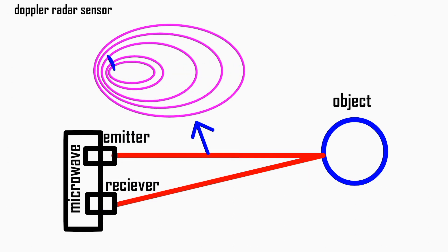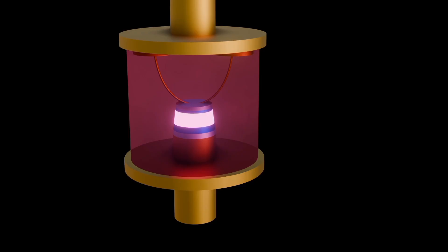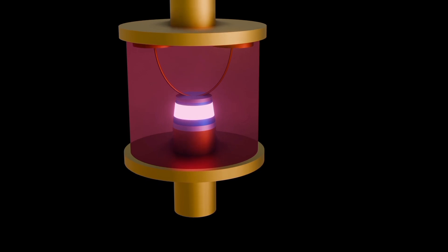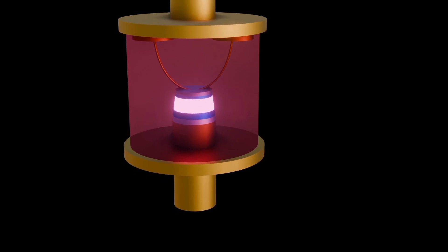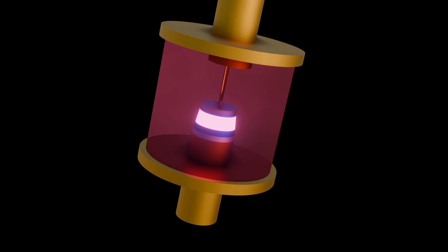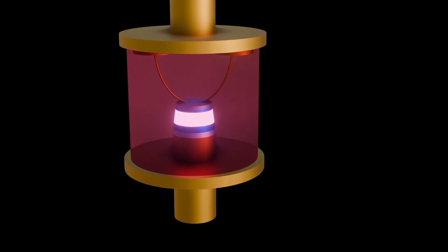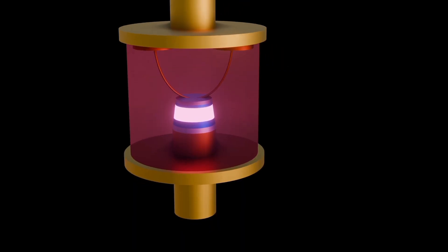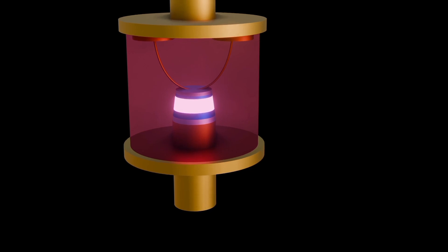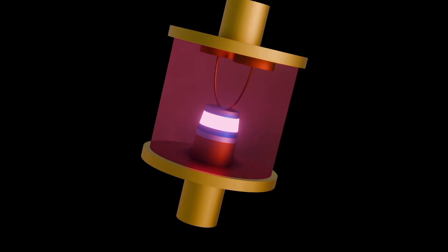Microwave emitters include microwave oscillators, which generate microwave signals at specific frequencies. Common types include Gunn diodes and magnetrons. Microwave emitters also contain amplifiers which boost the microwave signal strength. Traveling wave tube amplifiers (TWTAs) and solid-state power amplifiers (SSPAs) are frequently used.